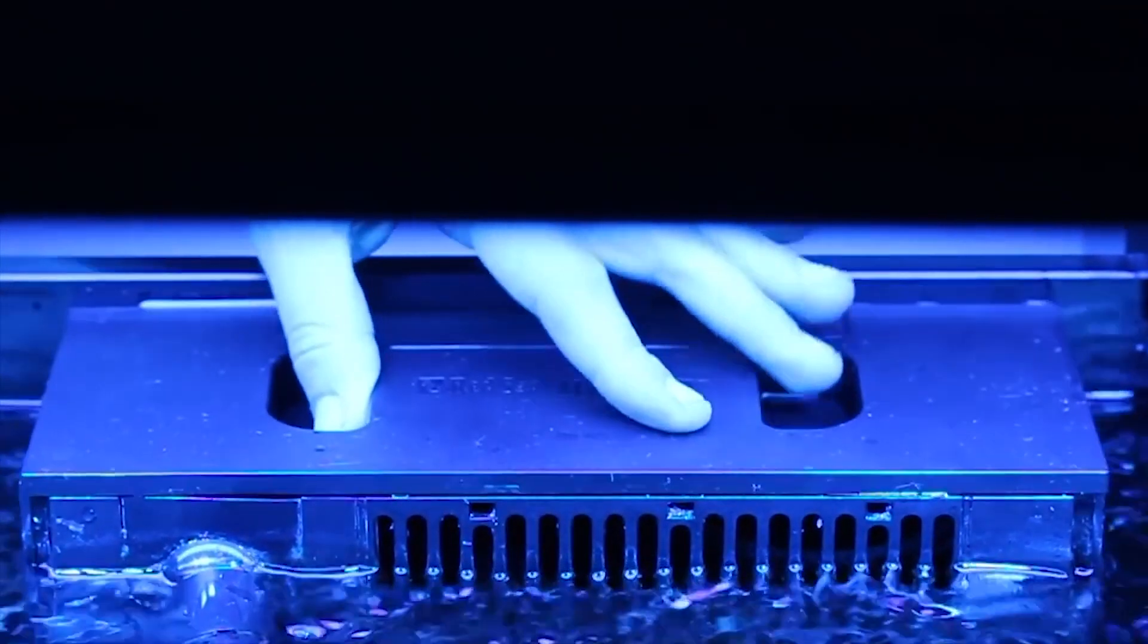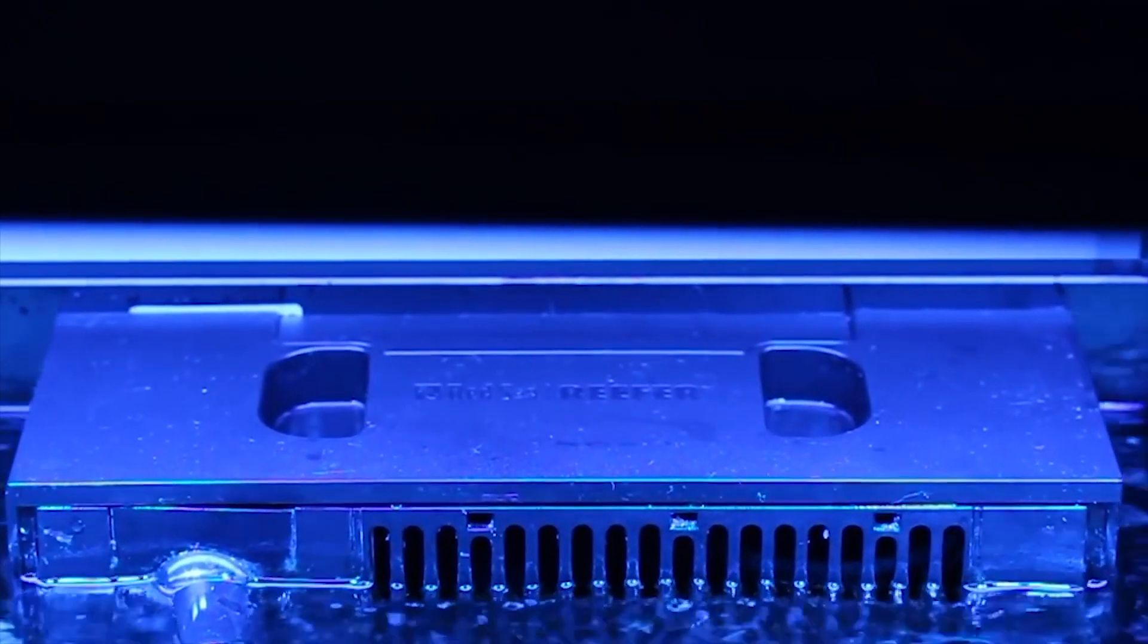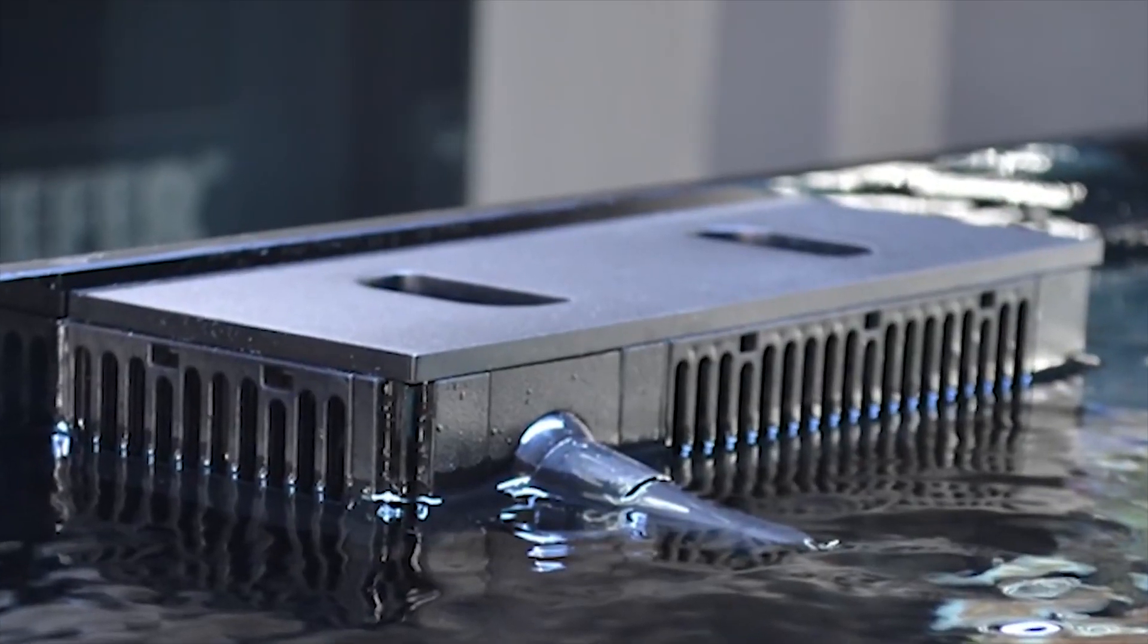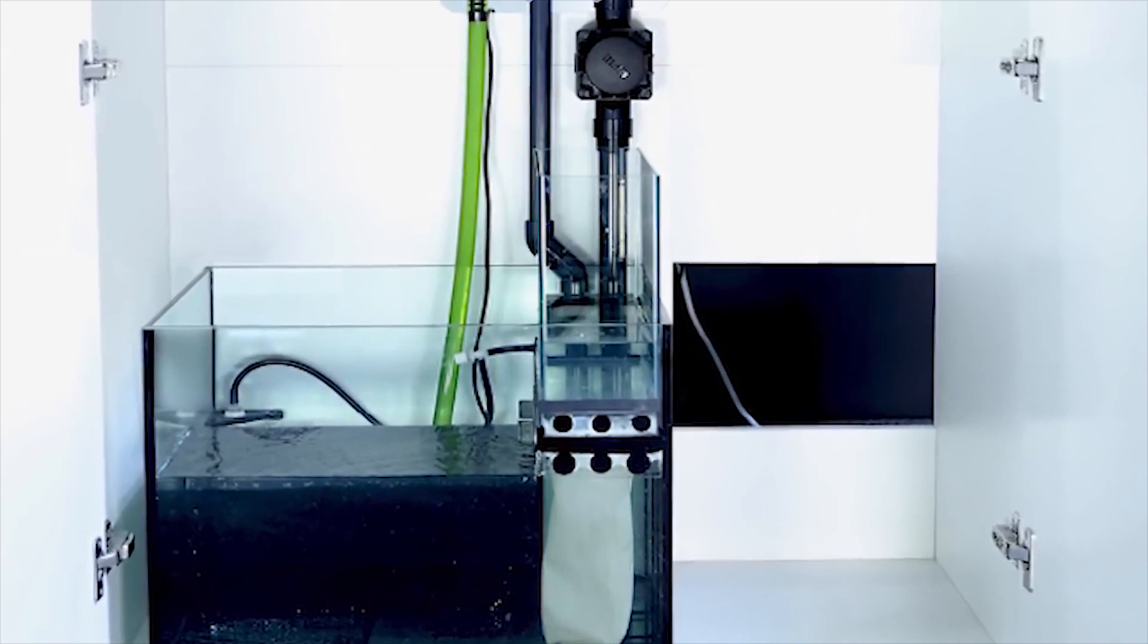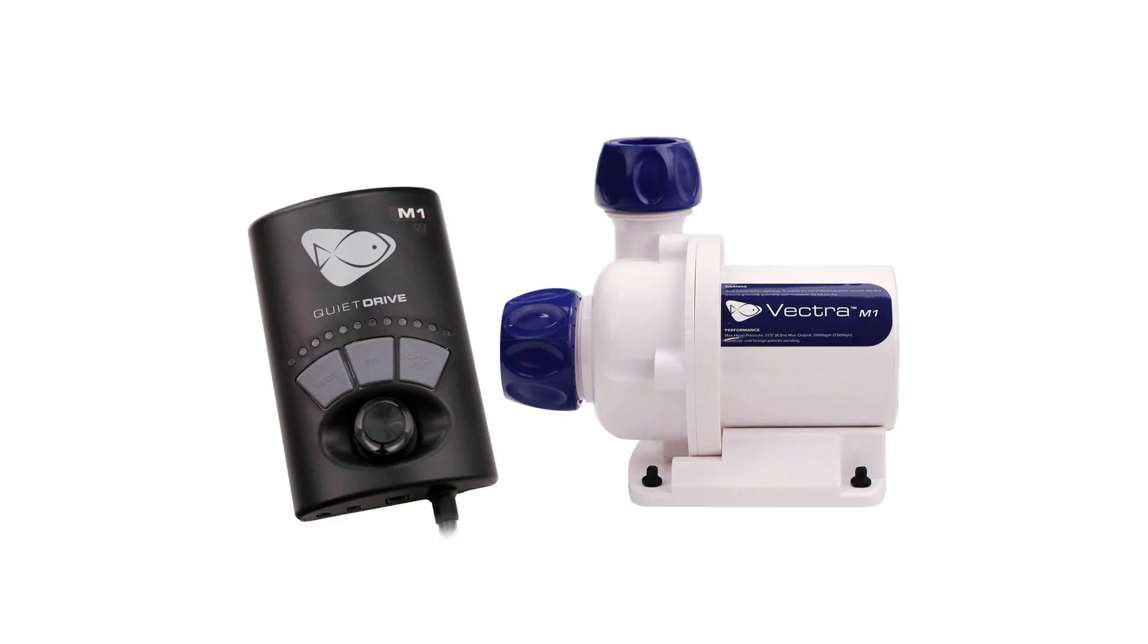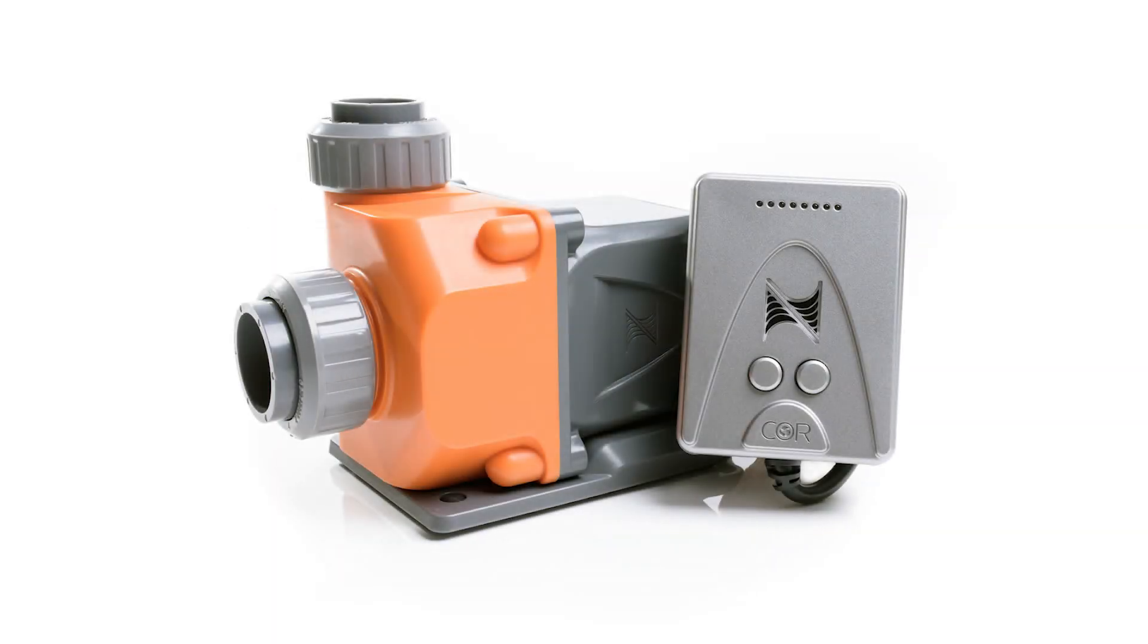Reef tanks are usually drilled with some holes to install the overflow and return lines. Ready tanks like Red Sea and Waterbox aquarium already have the overflow drilled and ready to be used. You will need to pick a return pump and some fittings to connect it to the system.